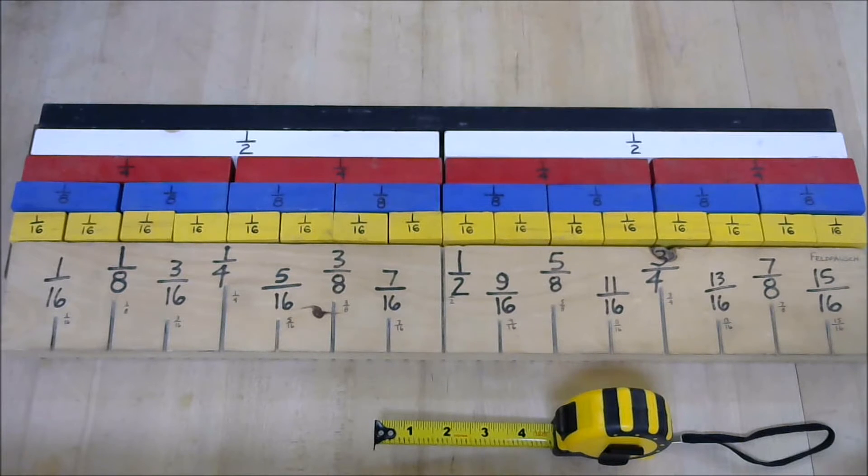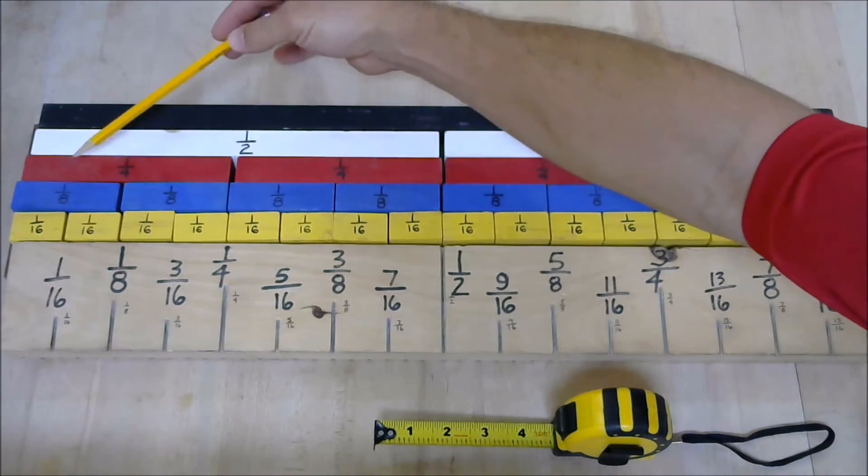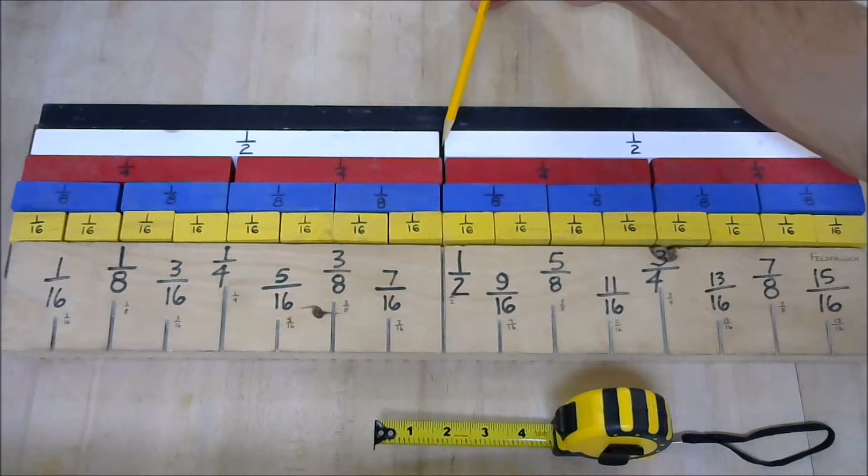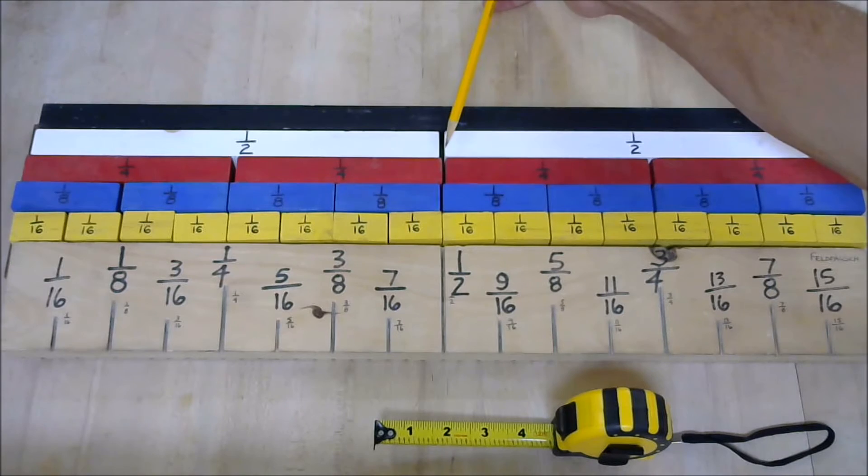Now as you work with the fractions of the inch, you'll notice that some fractions line up with other fractions. So 2 eighths line up with 1 fourth. 2 fourths line up with 1 half. 8 sixteenths also lines up with 1 half.